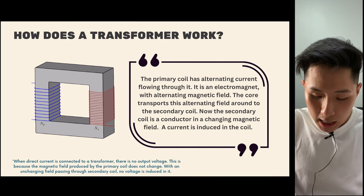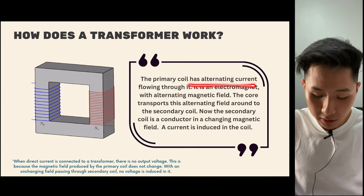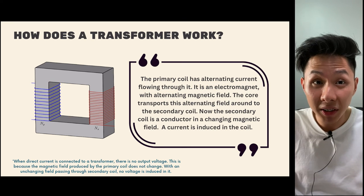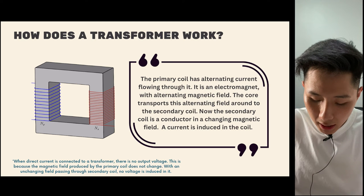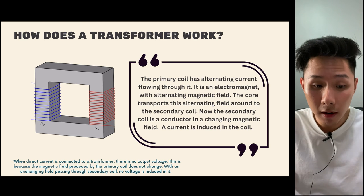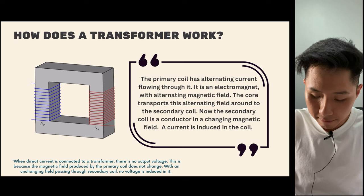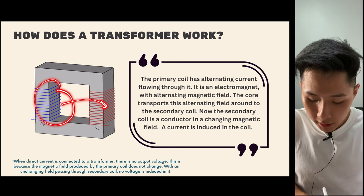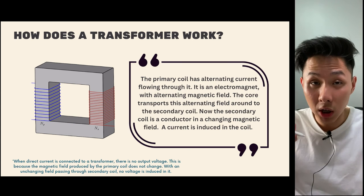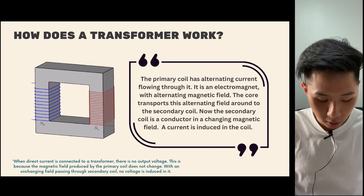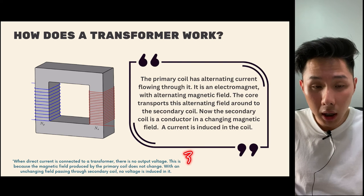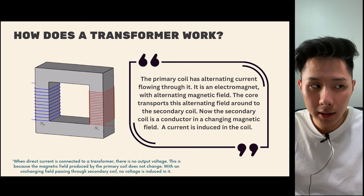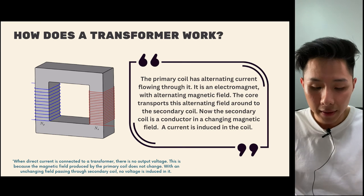How does a transformer work? The primary coil has alternating current flowing through it — direct current does not work with transformers. Because there is alternating current flowing in two directions, the magnetic field keeps changing. The iron core transports this alternating field from the primary coil to the secondary coil. The secondary coil is also in a changing magnetic field, and current is then induced in it. If you supply a transformer with direct current, it will not work.